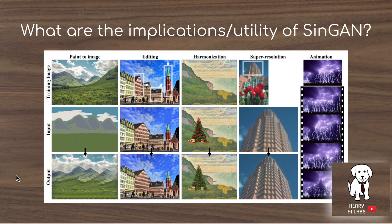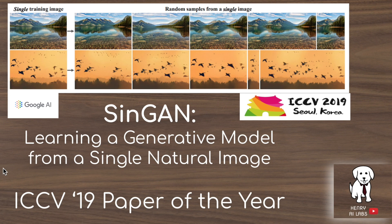The SYNGAN model, awarded best paper at ICCV, has wide implications for computer vision applications including paint-to-image, editing, harmonization, and animation — the last of which is relatively unexplored in generative adversarial network literature. SYNGAN could also be valuable for data augmentation by augmenting existing training samples. Some have noted interest in applying it to medical images. Thanks for watching this explanation of SYNGAN, the ICCV 2019 paper of the year. Please leave comments and subscribe to Henry AI Labs for more deep learning and AI videos.